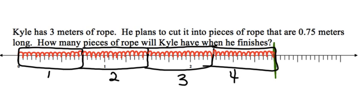We know now if we take 3 meters of rope and divide it into groups of 0.75, we will have four groups. Let's check our work using an algorithm.